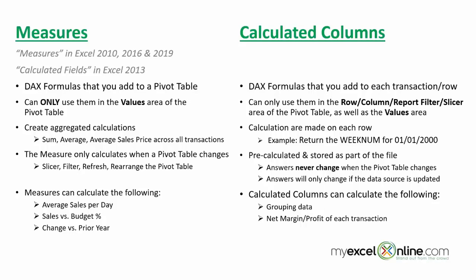The values in the calculated column inside the Power Pivot grid will only change when the data source gets updated. If your data source is connected to an outside source and new data comes in or gets refreshed each day, that's when the values will change. Calculated columns can be used to group data, or to find the net margin or net profit of each transaction — giving you the net margin for each row of data.